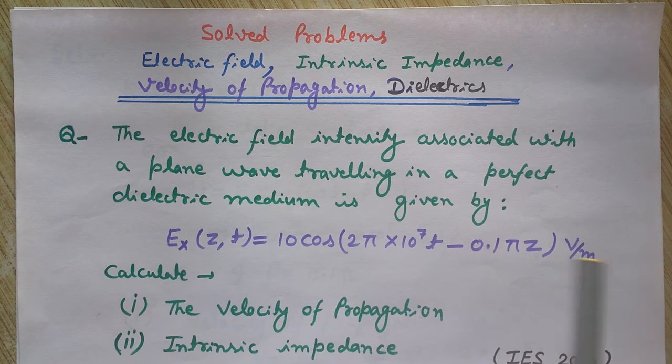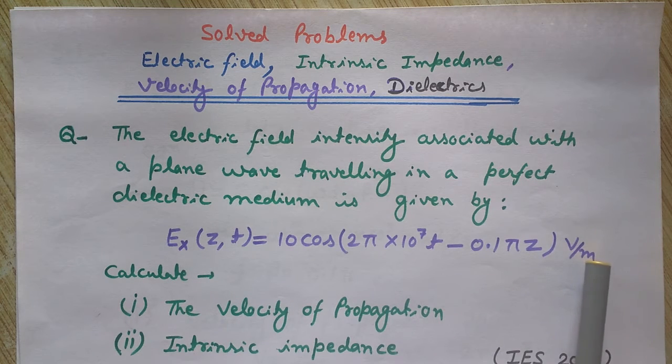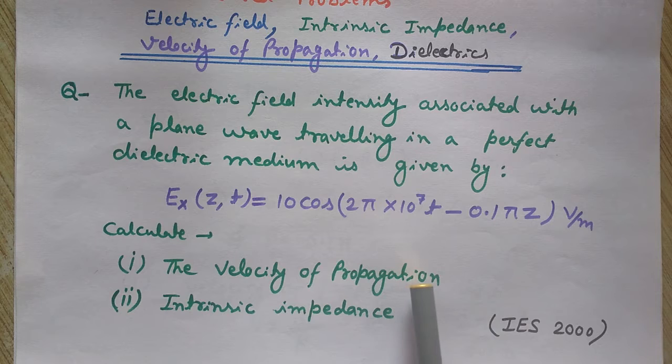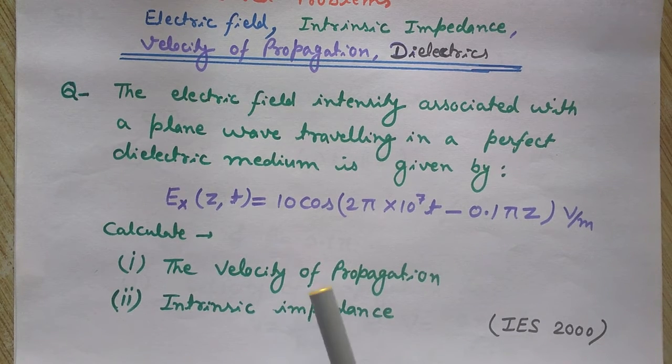I want to calculate the velocity of propagation and intrinsic impedance. We will find these two things from this given equation. This question was asked in the IES 2000 Indian Engineering Services exam.